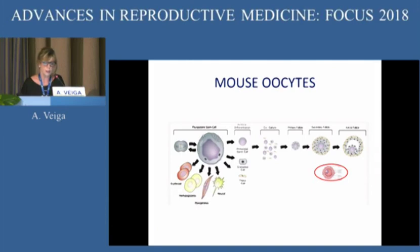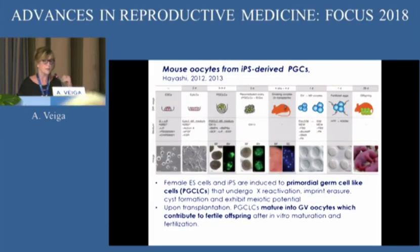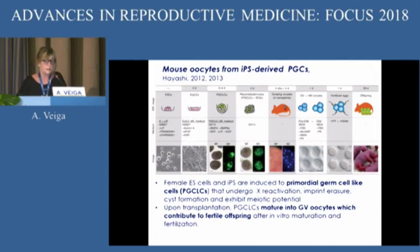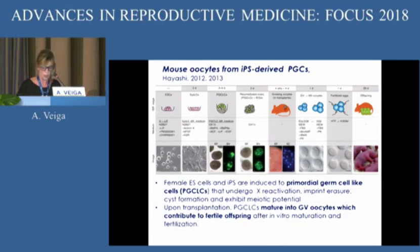Looking at what has been done in mouse oocytes, there are different papers, mostly from a group in Japan — the group of Saitou and Hayashi. They published papers in 2012 and 2013 showing they were able to convert pluripotent stem cells into primordial germ cells, and then by co-culturing with somatic cells — granulosa cells or testicular cells — they obtained both oocytes and sperm that were fertile and gave rise to offspring.